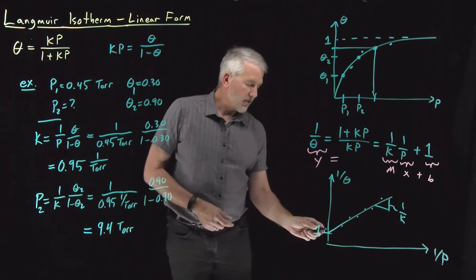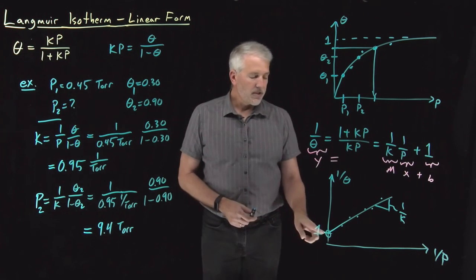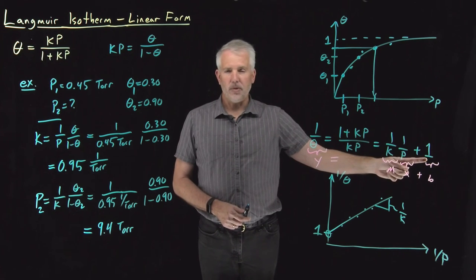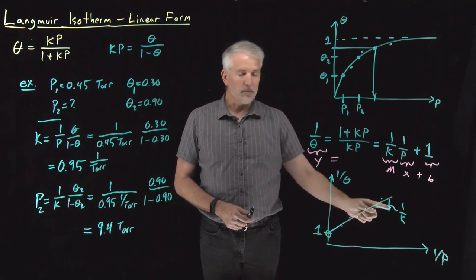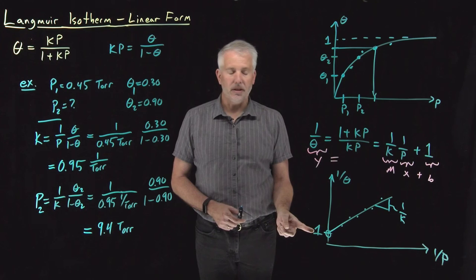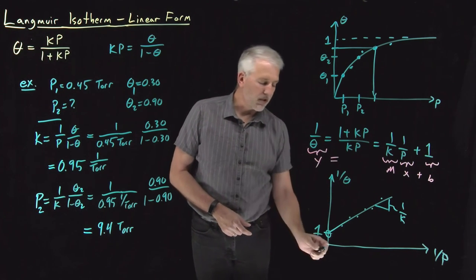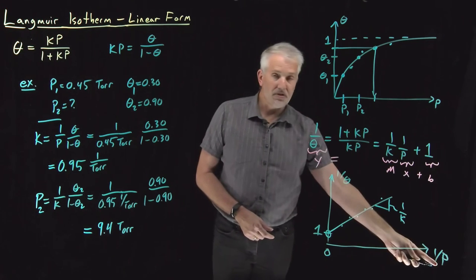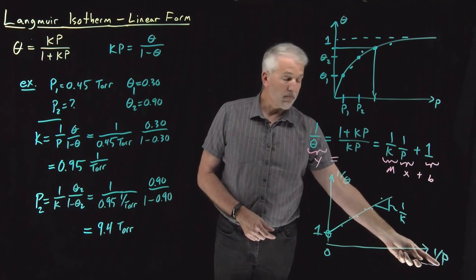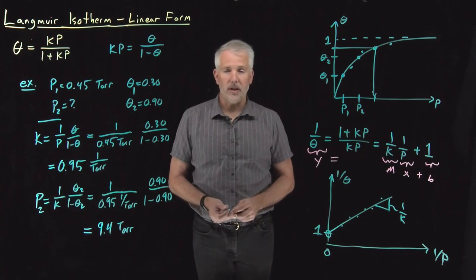In this particular case, notice that the intercept of the equation is always one. We get some information from the slope. We don't get all that much information from the intercept. The intercept just tells us as one over p becomes very small, as one over p approaches zero.